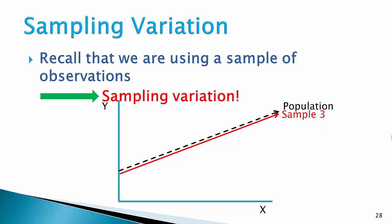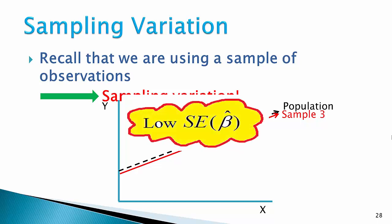Thus, there were good estimates of the population regression. In this case, the sample beta estimates had a low standard error. It's a measure of how consistent the sample beta hats would be if we resampled over and over again. It's a measure of the amount of sampling variation when estimating beta.